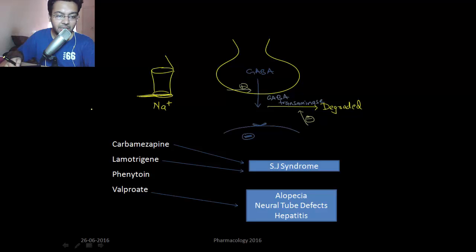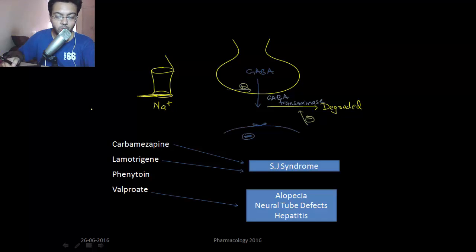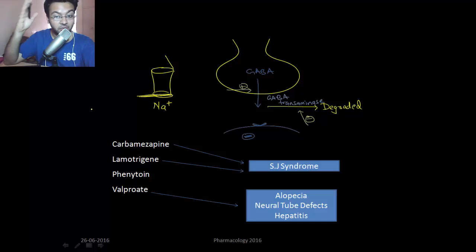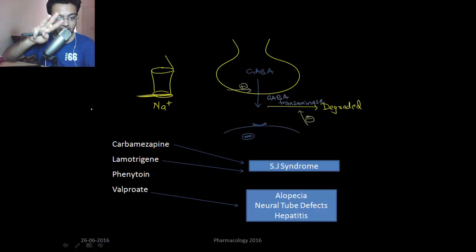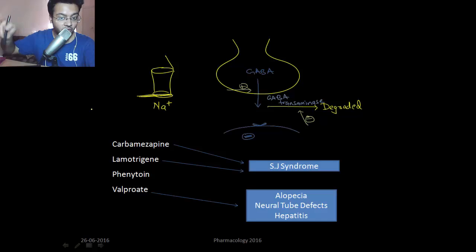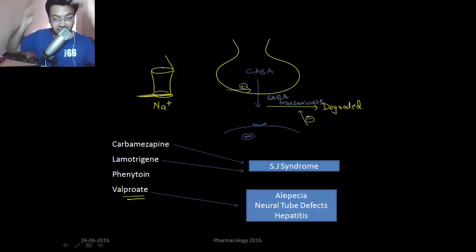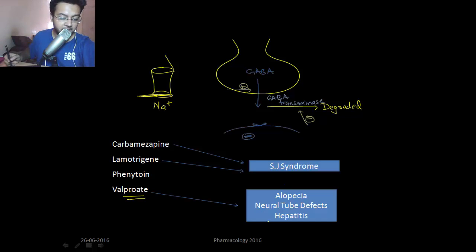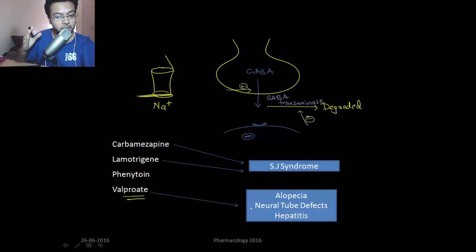From 'vi' in vigabatrin, remember its side effect is visual defect. The side effect of carbamazepine and lamotrigine is Stevens-Johnson syndrome. This is also a side effect of sulfonamides. Valproate can cause alopecia (loss of hair), neural tube defects, hepatitis, and fulminant hepatitis in children less than two years old — so do not give valproate to children under two years.